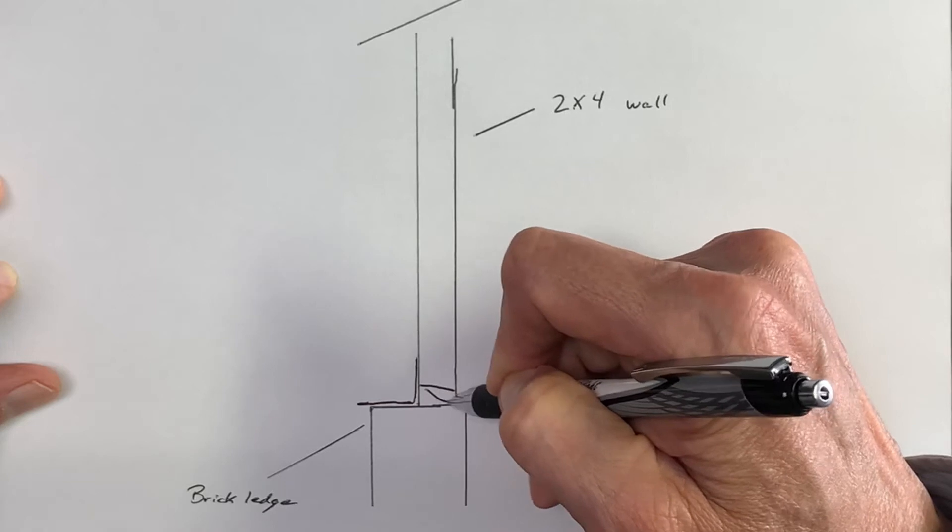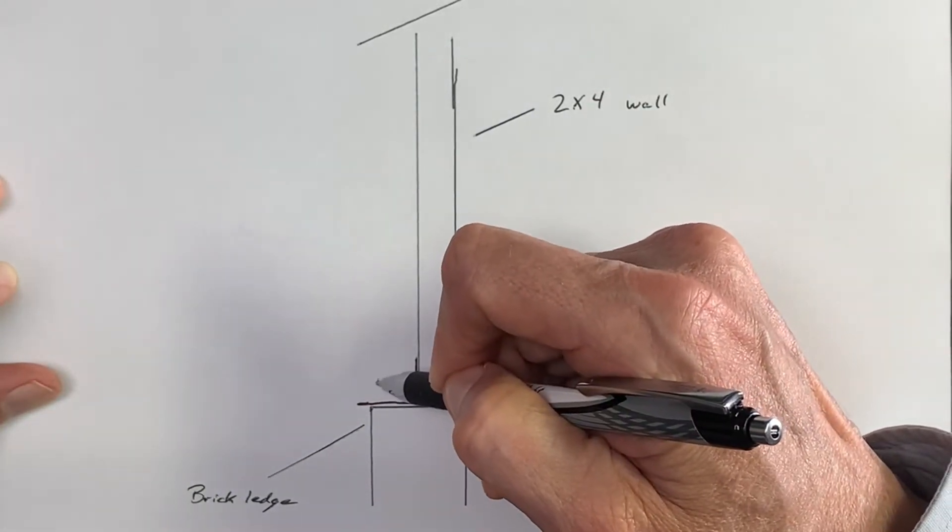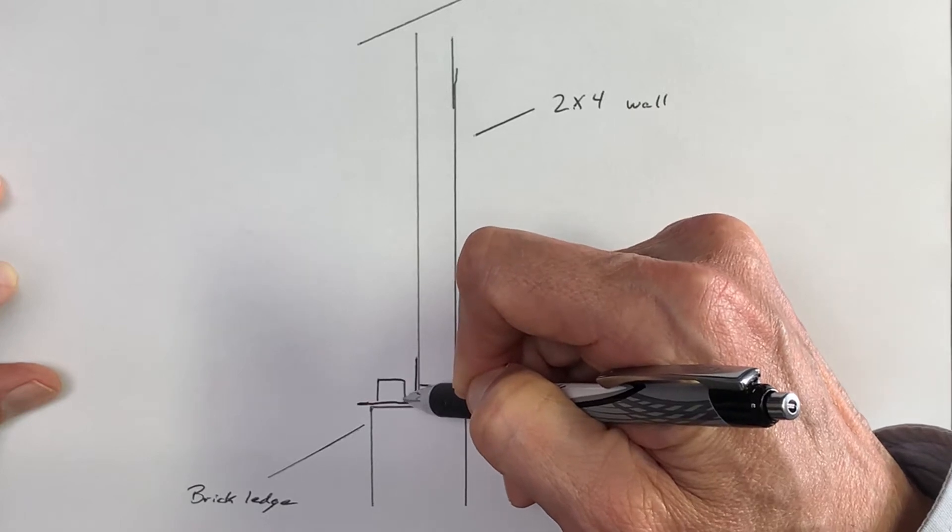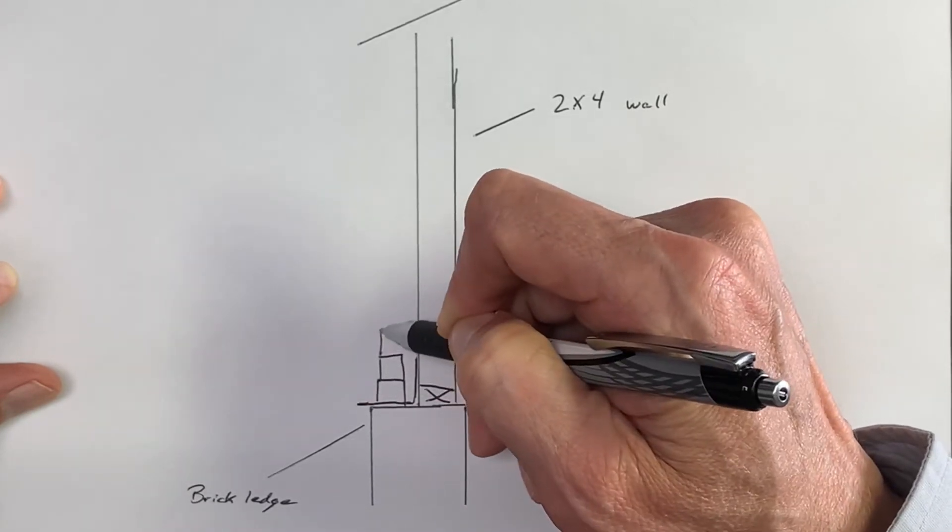Then this is your 2x4 studded wall here. Bricks start, your first course of bricks starts right there, straight on top of the plastic, and goes up from there.